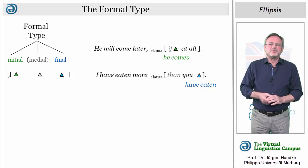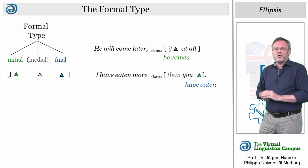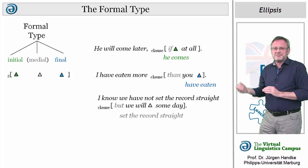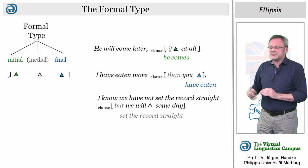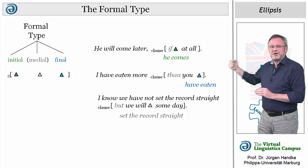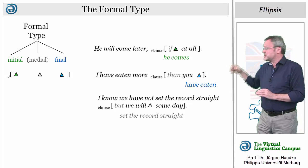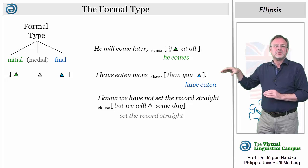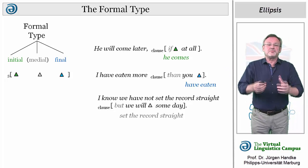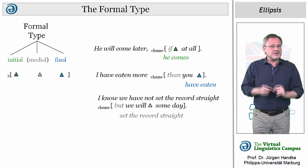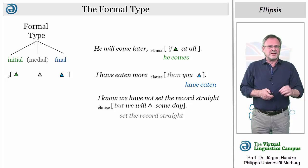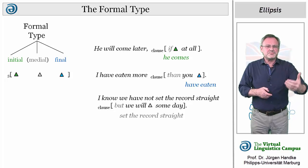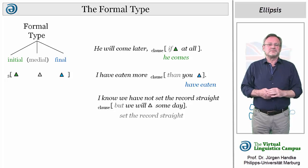In 'I know we haven't set the record straight, but we will someday,' we can argue that the adverbial 'someday' is optional and the type of ellipsis is thus final.